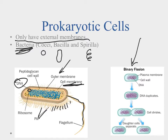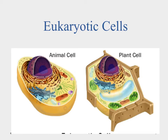One interesting thing about prokaryotic cells is how they reproduce — through binary fission. The DNA inside duplicates, one copy goes to each side of the cell, it splits down the middle, and creates two daughter cells that are exactly the same. It's simply copying the cell and making two copies from it.